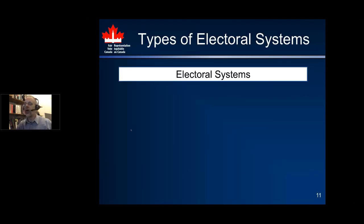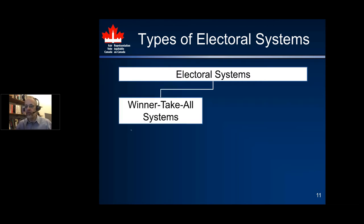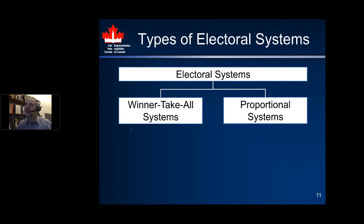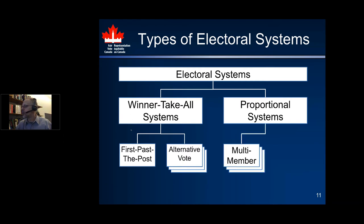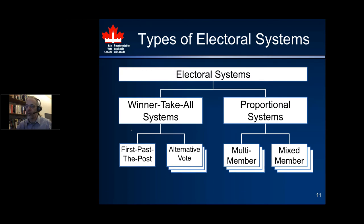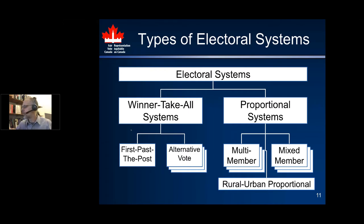There are a variety of different kinds of electoral systems that fall into several families. One family is the winner-take-all systems; another is proportional systems. Canada currently has first-past-the-post, which is winner-take-all. Another often-proposed system is alternative vote. On the proportional side, multi-member is one subfamily, and mixed-member is another. We talked about multi-member systems in the previous webinar. In the third webinar in about two weeks, we'll talk about rural-urban proportional, which is a hybrid of multi-member and mixed-member.